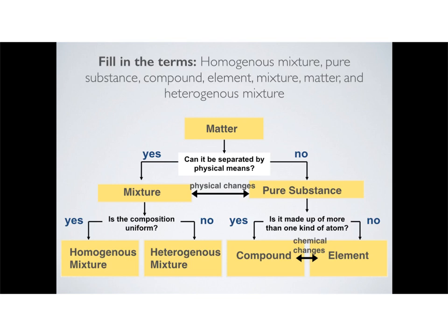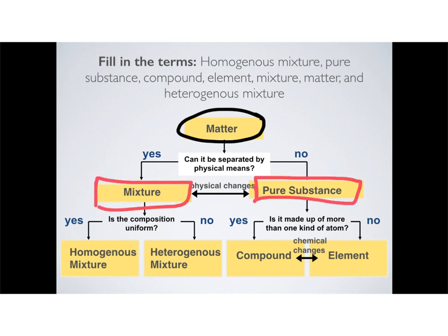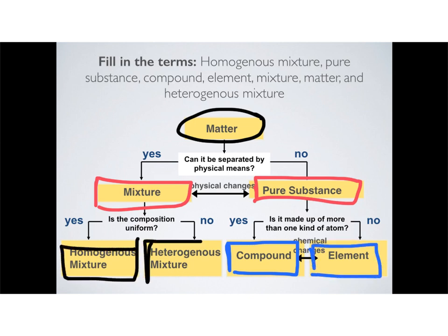This is how we classify all of matter. The first broad category is either mixture or pure substance. If it's a pure substance, it will either be a compound or an element. If it is a mixture, it'll either be homogeneous or heterogeneous. Remember: only mixtures can be physically separated — pure substances cannot. Pure substances must be chemically separated.